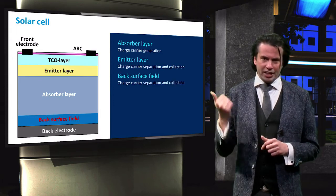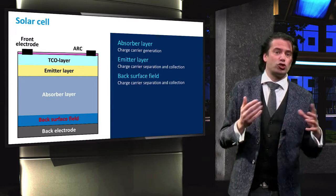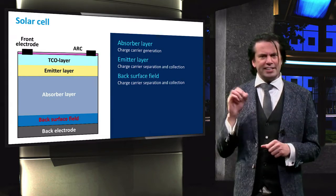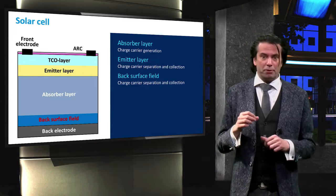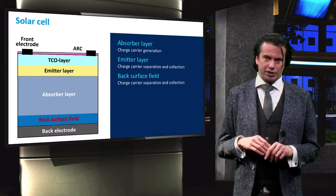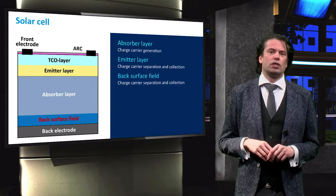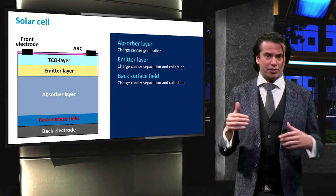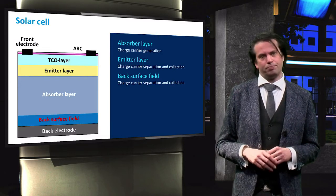Similarly, at the back of the solar cell we have the back surface field, or BSF. This acts as a semi-permeable membrane for majority charge carriers, in this case holes. With the BSF and the emitter, we can separate electrons and holes to either side of the solar cell.